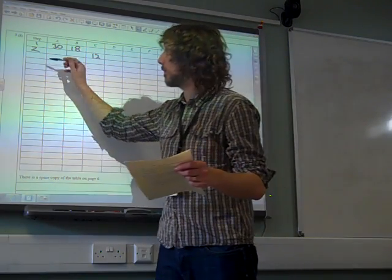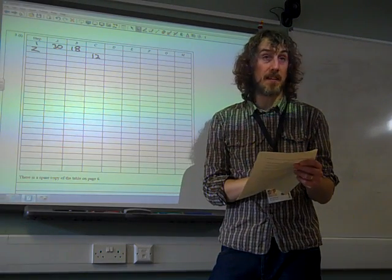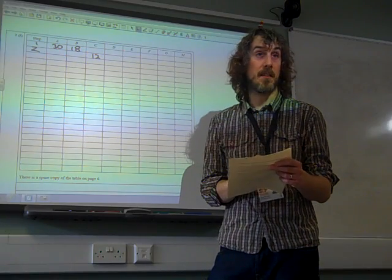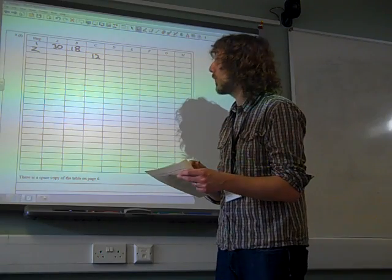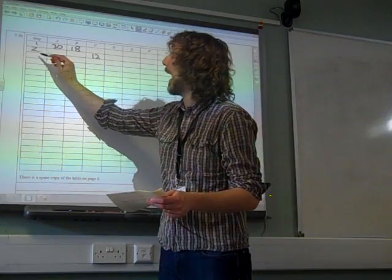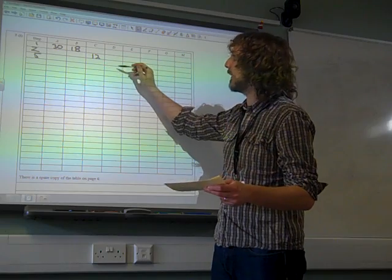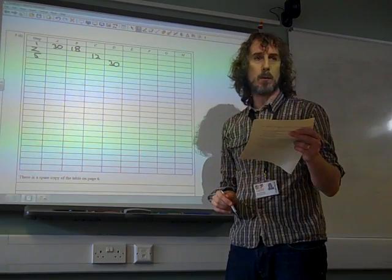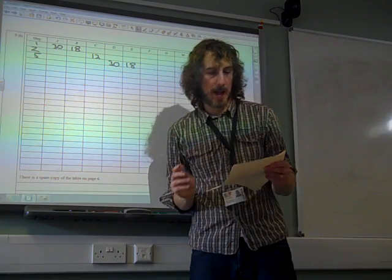Step three, if, well hang on, we'll read this first. If c is less than zero, c isn't less than zero. So we don't do that. Step four, if c equals zero, c doesn't equal zero. So we're not doing that one. Step five, if c is bigger than zero, let d equal a and e equal b. So we seem to have ended up there.